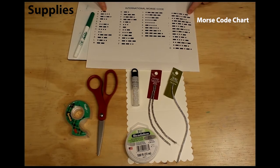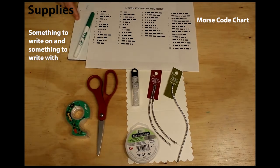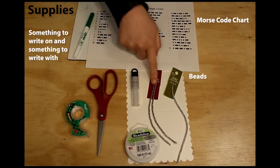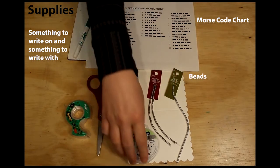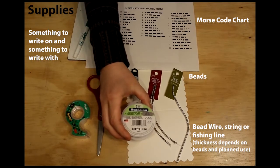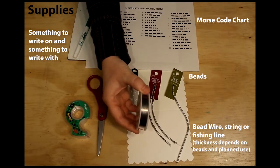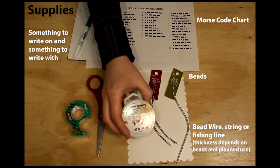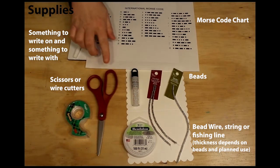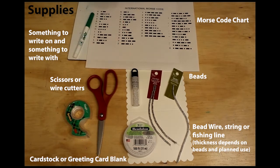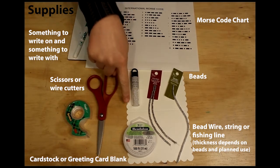For the Morse code art project, of course I needed access to the international Morse code, as well as something to write on and something to write with. I chose a whiteboard and a white marker. I used three different types of beads, which I'll tell you about in a minute, as well as a seven-strand bead wire which is about just under half a millimeter.